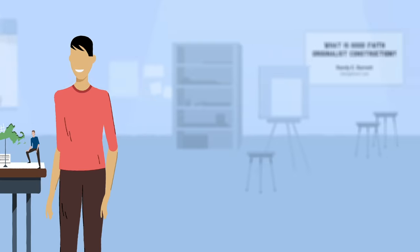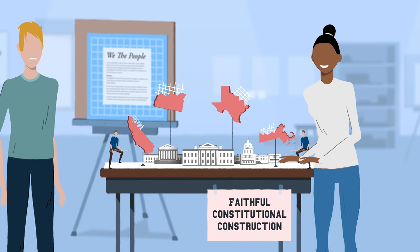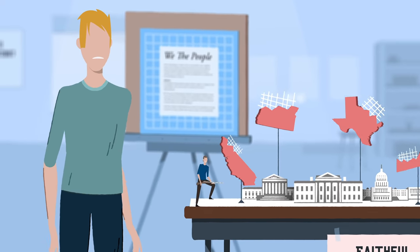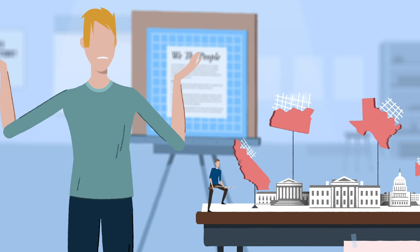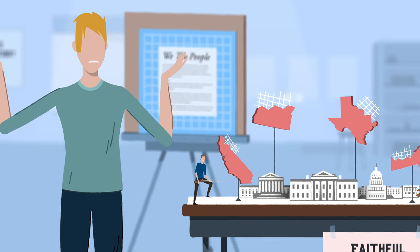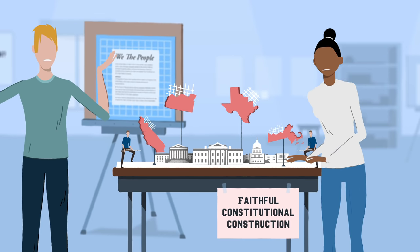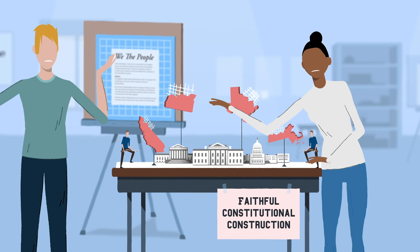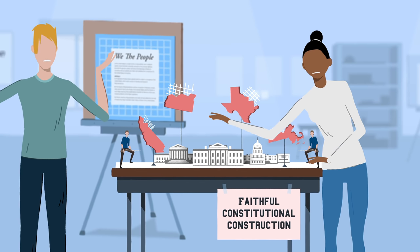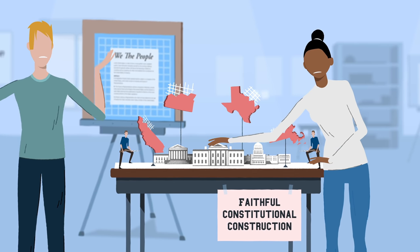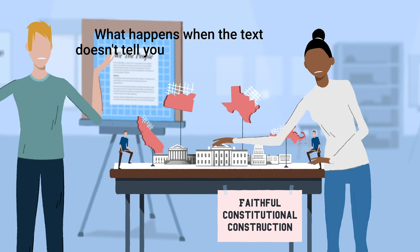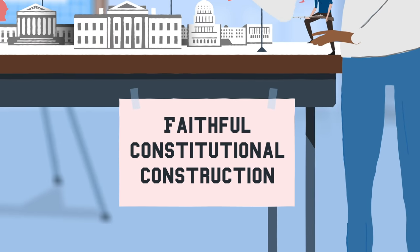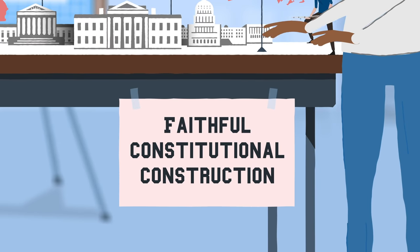Faithful constitutional construction must be faithful to the text of the Constitution and cannot be used to undermine or override that text. Faithful constitutional construction only applies when there is some uncertainty in the application of the original meaning of the text — when the text itself isn't telling you exactly what to do in a particular case. Faithful construction then fills in that gap.